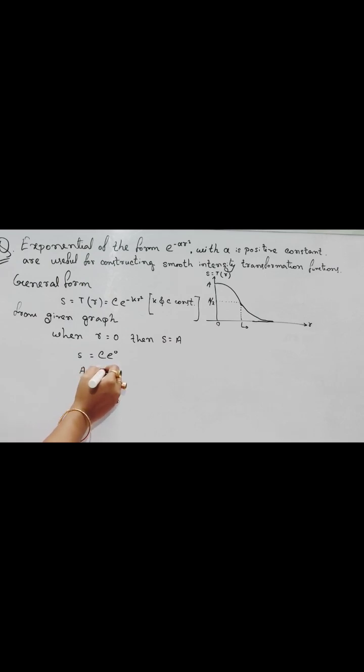We can write A equals to e to the power 0 means 1 times C. So when R equals to 0, then S equals to A. At that time, C equals to A. The value of C is A.